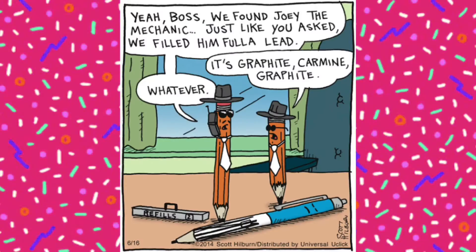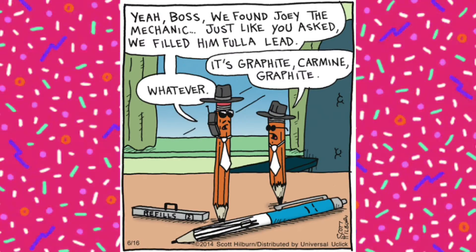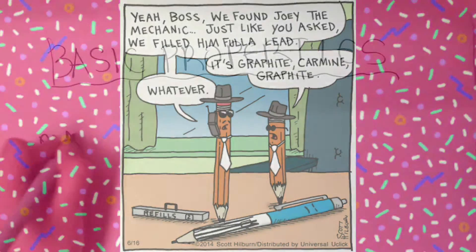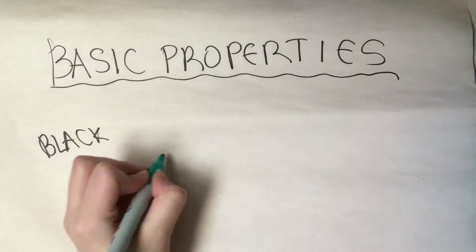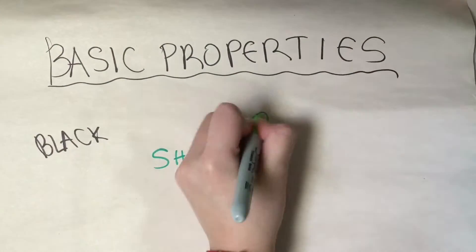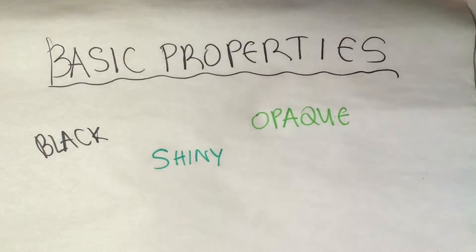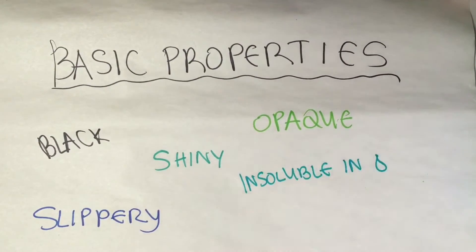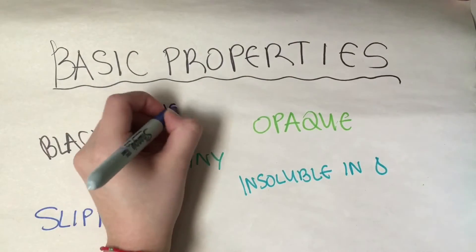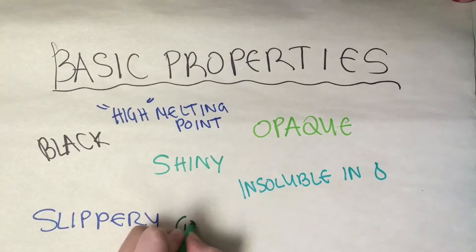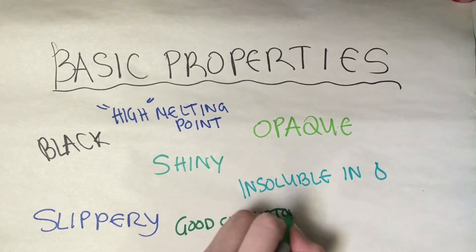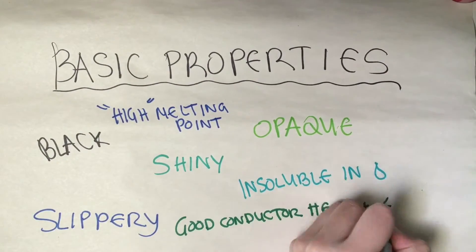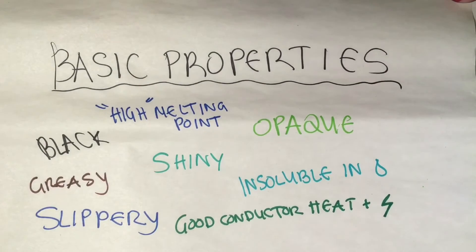What's next? Graphite. Graphite is the most stable form of carbon and one of the most common carbon allotropes. Basic properties: graphite is black, shiny, opaque, slippery, insoluble in water, has a high melting point, is a good conductor of electricity and heat, and is soft and greasy.